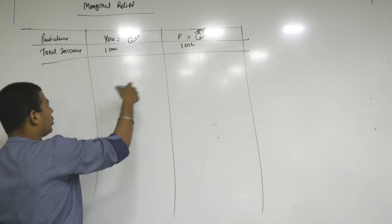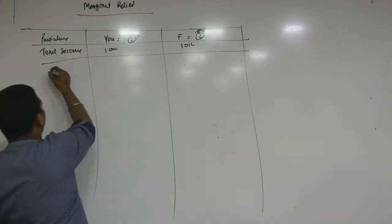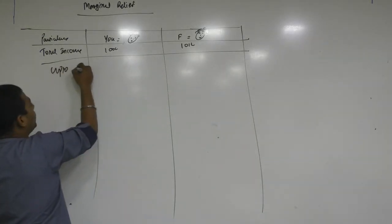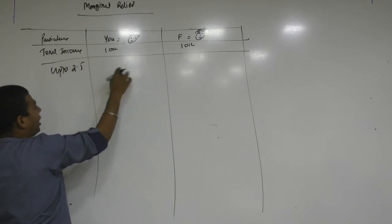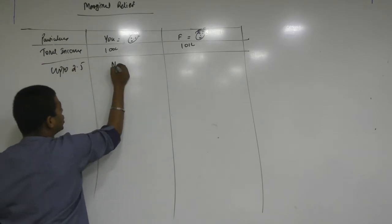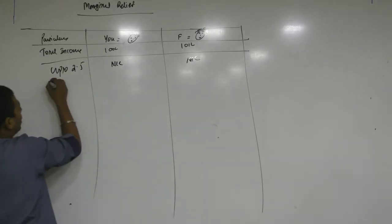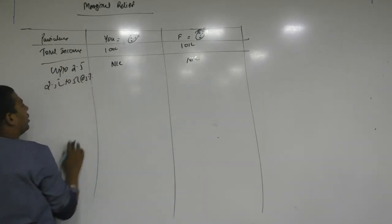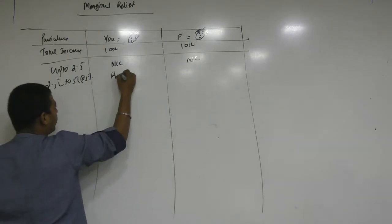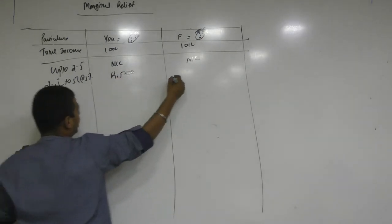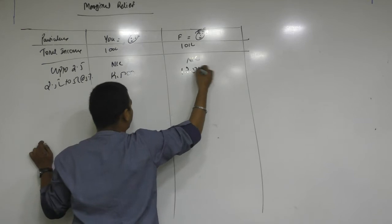Okay, so before we go into the marginal relief and all, basic tax you should know. Up to 2.5 lakh the rate is nil. So here also nil. Your friend will also pay nil. Then 2.5 lakh to 5 lakh at the rate of 5%. Then you will pay 12,500. Your friend will also pay 12,500.